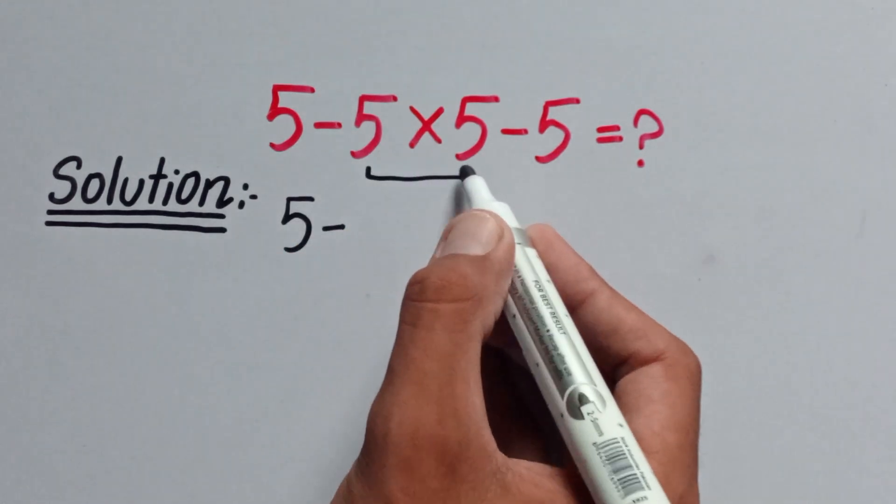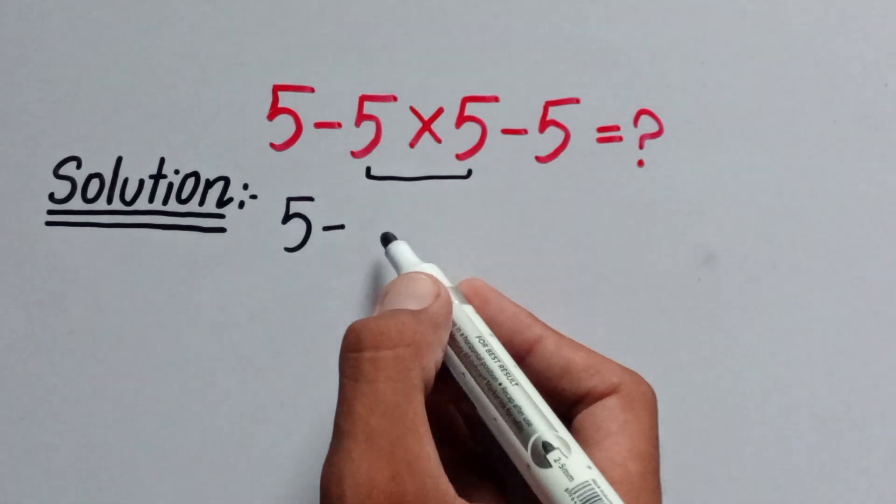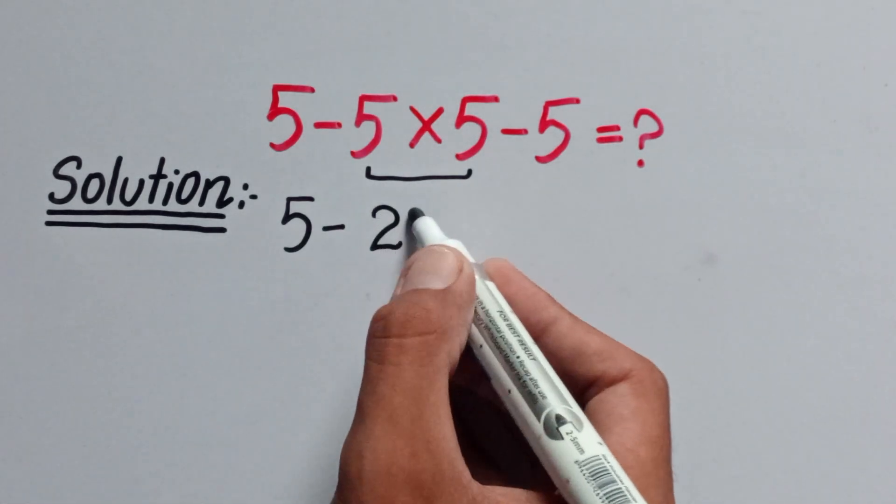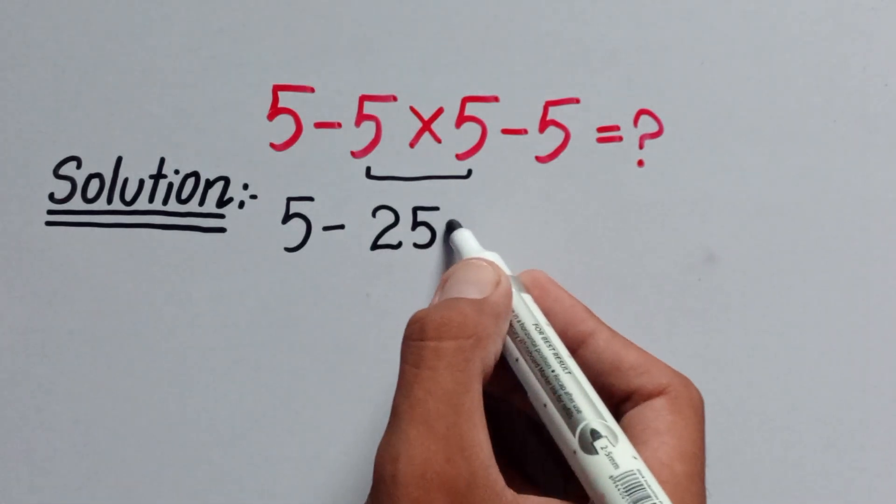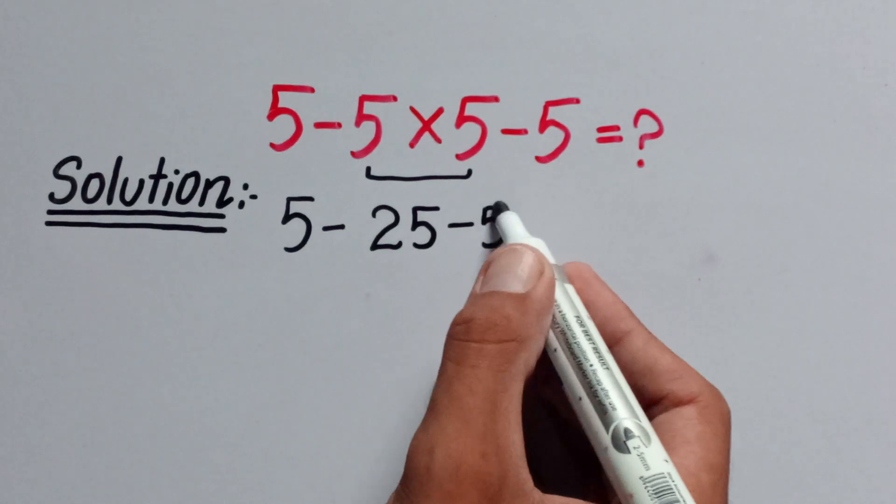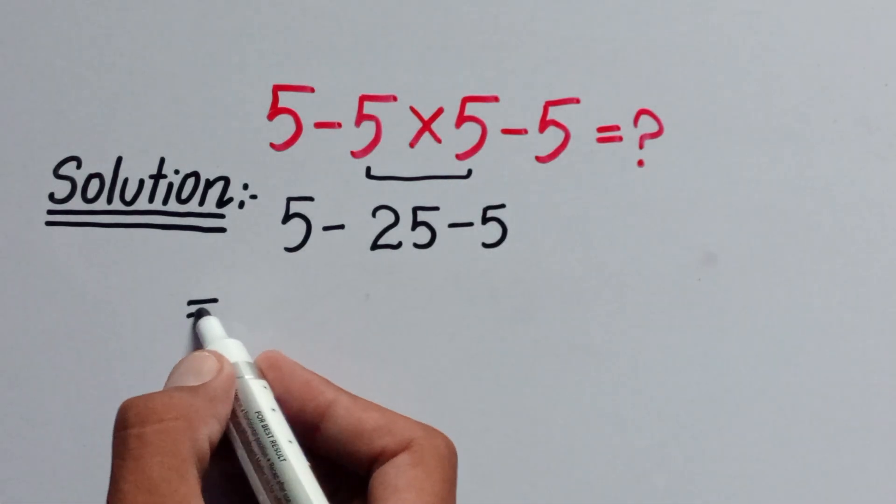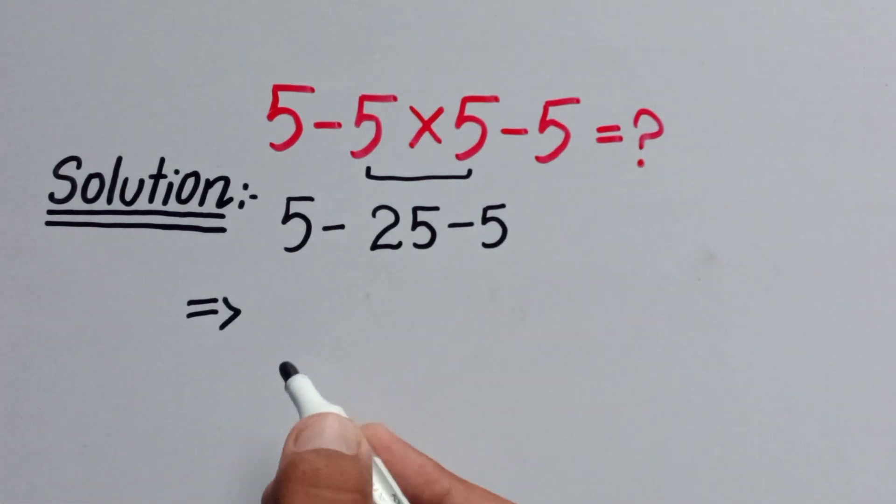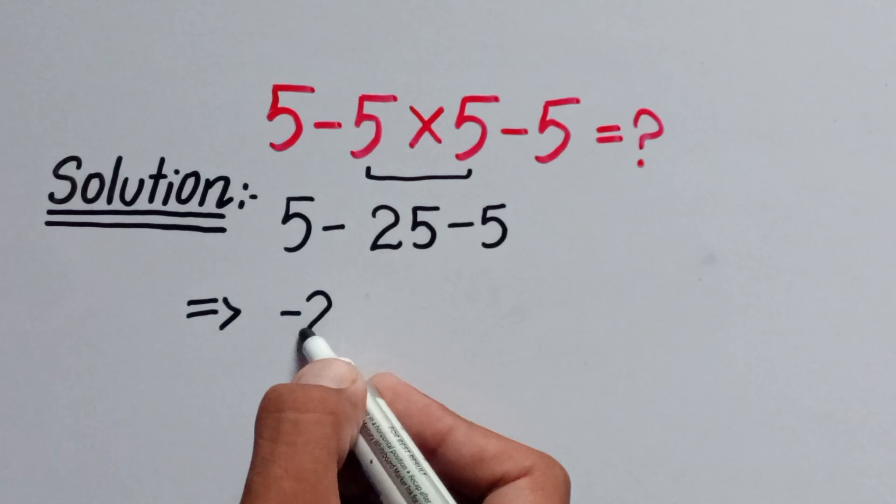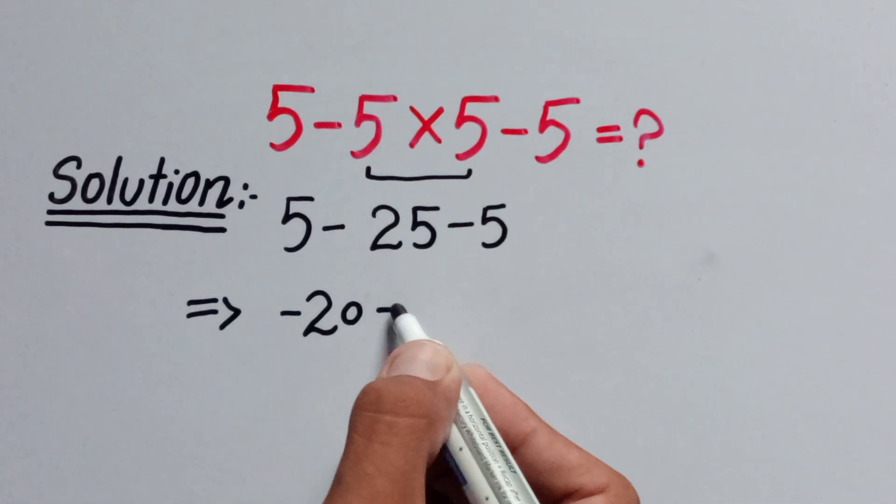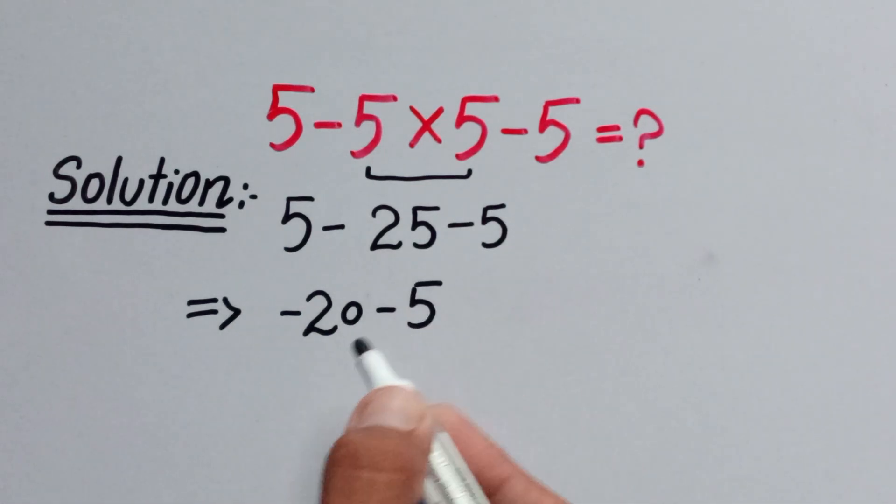5 times 5 equals 25. So we have 5 minus 25 minus 5. Now, 5 minus 25 equals minus 20. And minus 20 minus 5 equals minus 25.